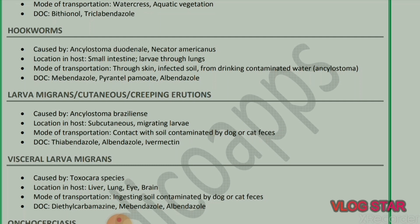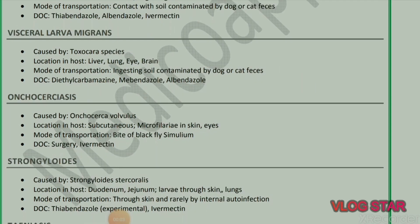Next parasite: Cutaneous larva migrans (CLM) — creeping eruptions, caused by Ancylostoma braziliense. Location in host: subcutaneous migrating larvae. Mode of transmission: contact with soil contaminated by dog or cat feces. Drug of choice: thiabendazole, albendazole, and ivermectin.